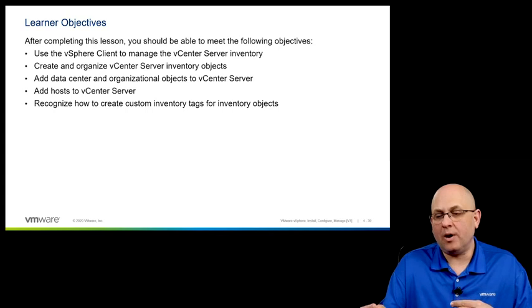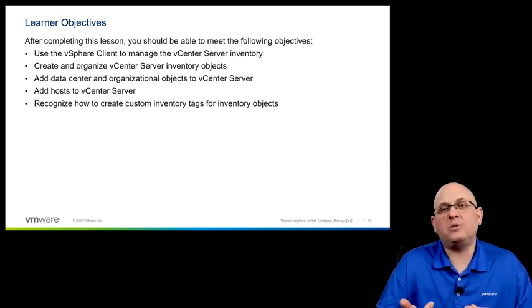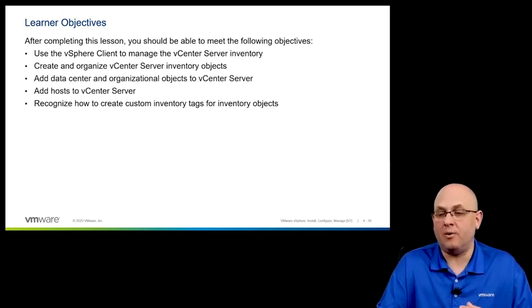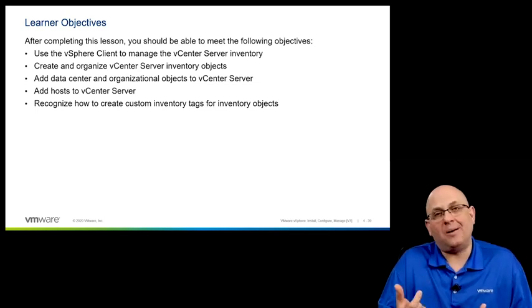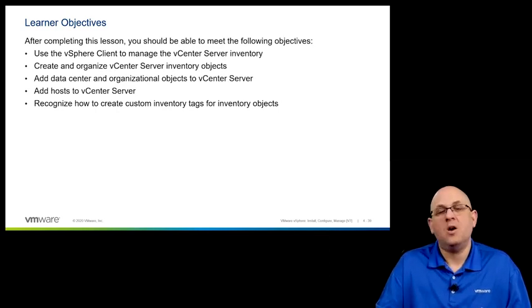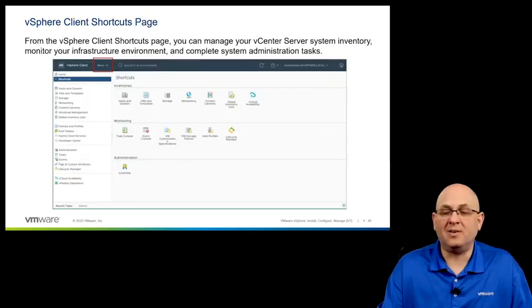In lesson four, we're going to have a look around the vSphere client to understand how the inventory is structured within vCenter. We'll use that client to manage the inventory, create some vCenter inventory objects, and use those to organize things like virtual machines, hosts, and clusters. We're going to add a data center object, which represents your physical data center containing things like your hosts and clusters, add our hosts to vCenter, and learn how to create some custom inventory tags for your different inventory objects.